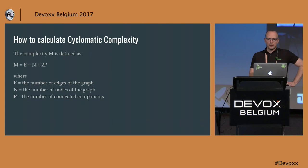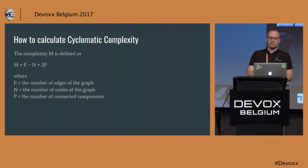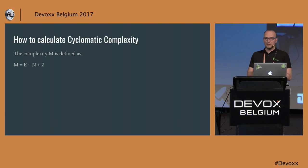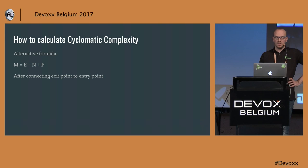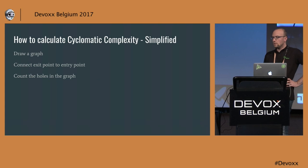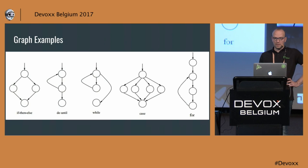How do we calculate cyclomatic complexity? It's a mathematical thing — you create a graph, and complexity is the number of edges minus the number of nodes plus two times the number of connected components. Luckily, the number of connected components is always one in a small piece of code, so that makes it edges minus nodes plus two. There's also a slightly alternative formula: if you connect the exit point back to the entry point, it changes to edges minus nodes plus one. There's an even more simplified way — draw that graph, connect the exit point to the entry point, and count the holes in the graph.